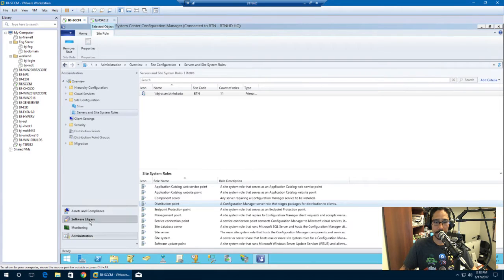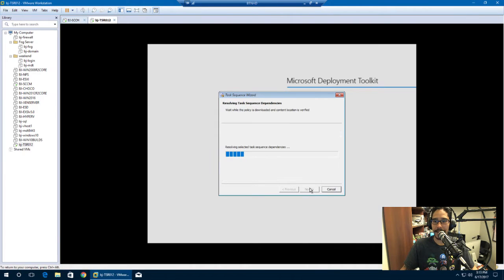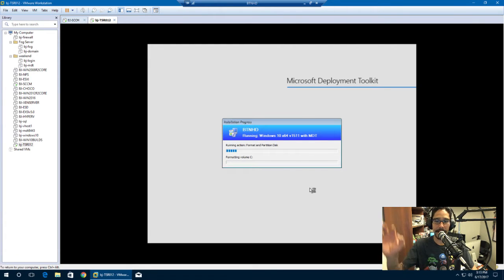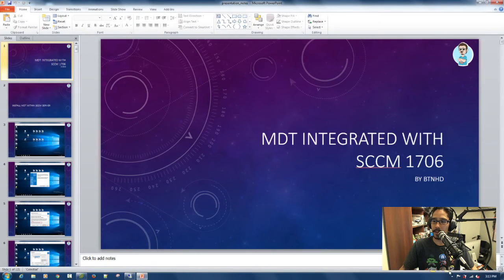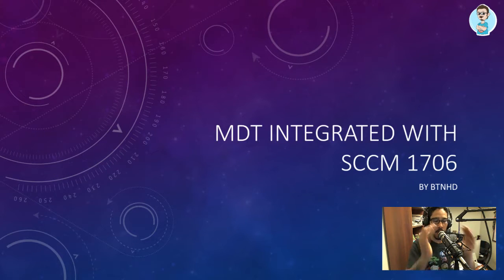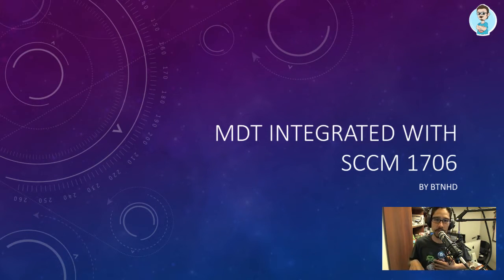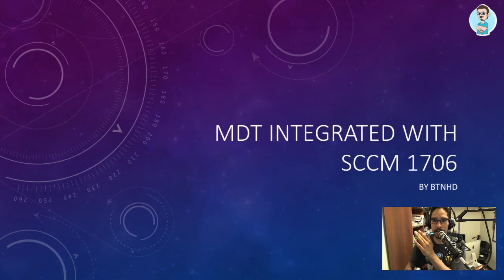The policy it's retrieving is 'Windows 10 x64 v1511 with MDT' — that's the task sequence name. In the SCCM console under Software Library > Operating Systems > Task Sequences, that's the name of our task sequence. I'll hit next and let it ride, then minimize the remote desktop and bring up the PowerPoint to stay on point.